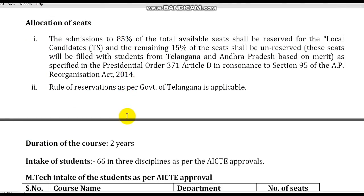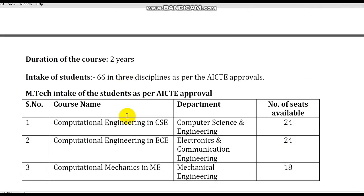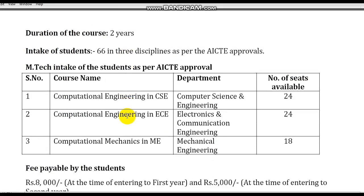The duration of the course is two years. Total seat intake: Computational Engineering in Computer Science Engineering — 24 seats; Computational Engineering in Electronics and Communication Engineering — 24 seats; Computational Mechanics in Mechanical Engineering — 18 seats. Total 66 seats available.